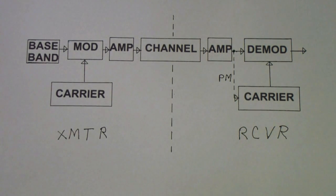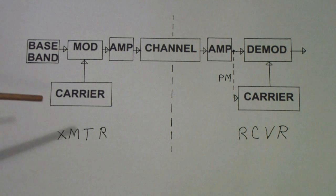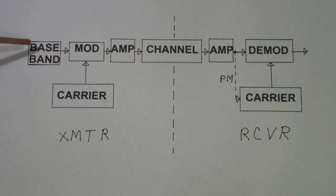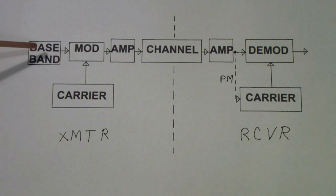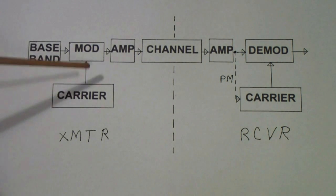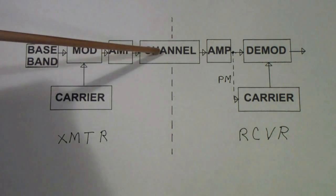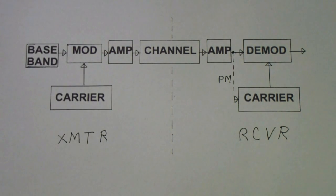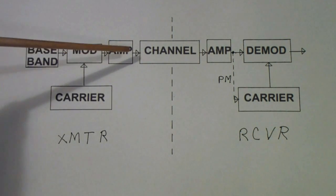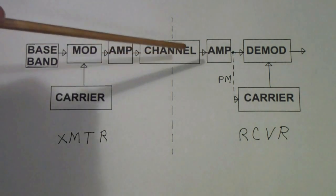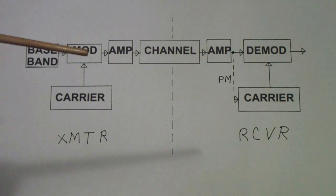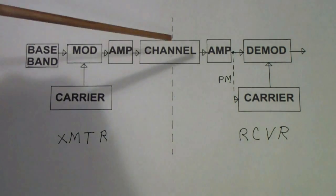Earlier I mentioned Claude Shannon and his mathematical theory of communication. This is a model of a communication system. Normally, the input is called baseband—this can be an analog baseband signal like voice, but normally we're talking about digital baseband, that is, a string of zeros and ones. There is a carrier. The baseband and the carrier are combined in a modulator, then that signal is amplified and put out through a channel. The channel can be anything—a pair of wires, a microwave link, a satellite connection. The channel causes the signal to be distorted: noise is added, phase is shifted, frequency can be shifted. Basically, everything about that signal gets altered by the channel to some extent.